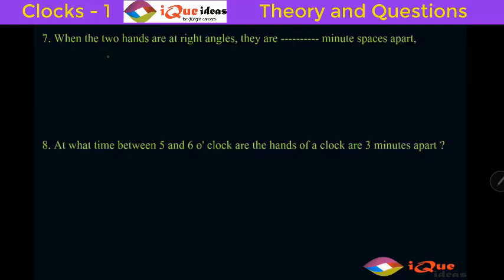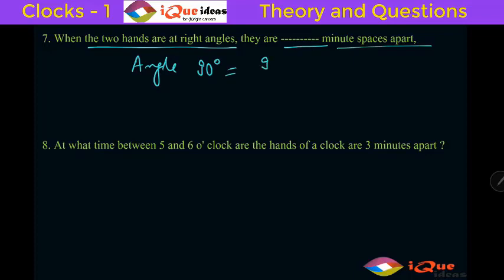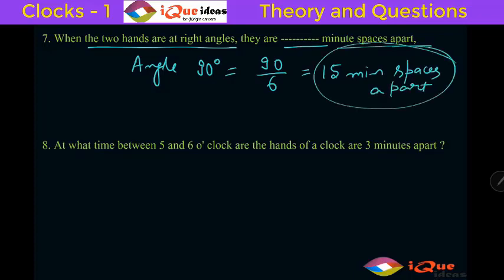When the two hands are at right angle, how many minute spaces apart are they? Right angle means 90 degrees. So 90 divided by 6 is 15 minute spaces apart. Whatever the angle, divide by 6 — that gives the minute spaces apart.